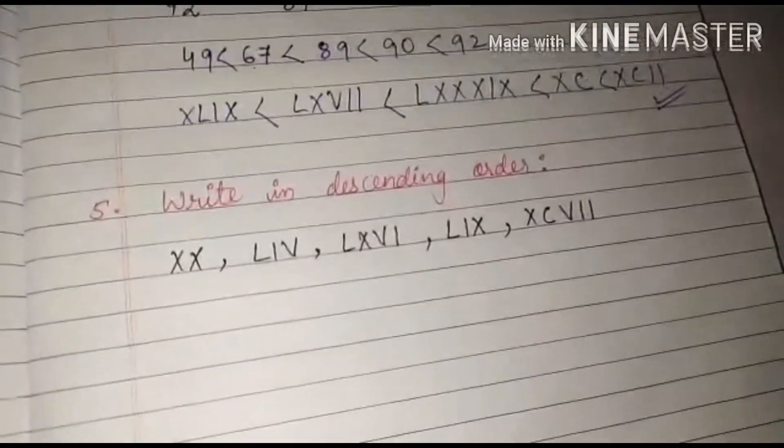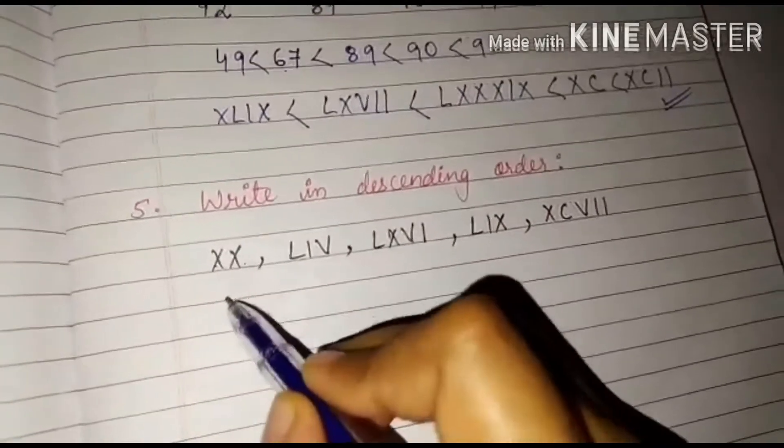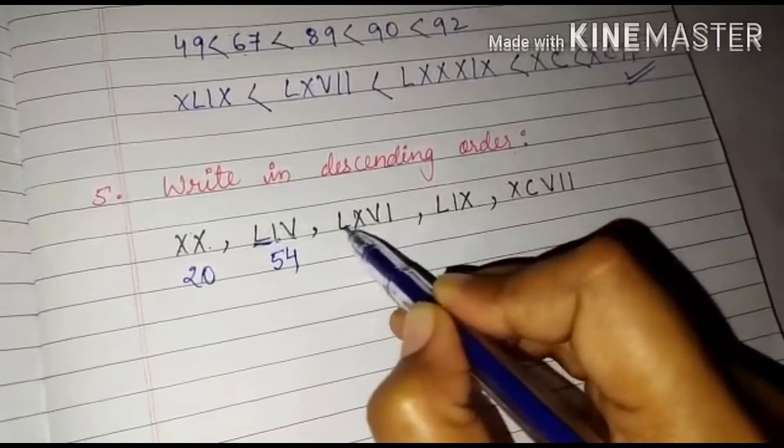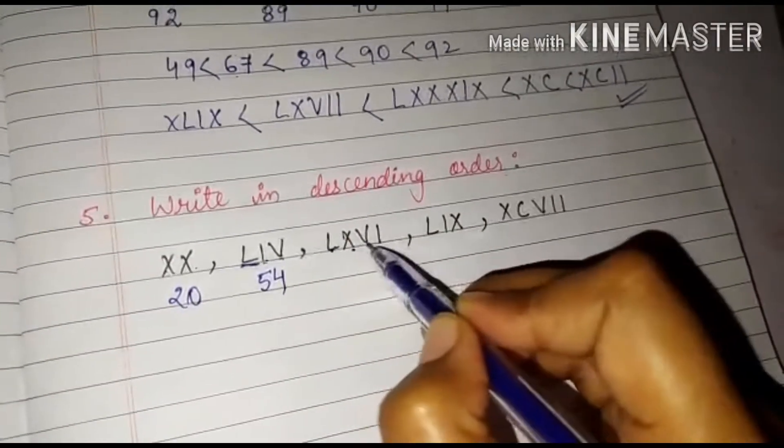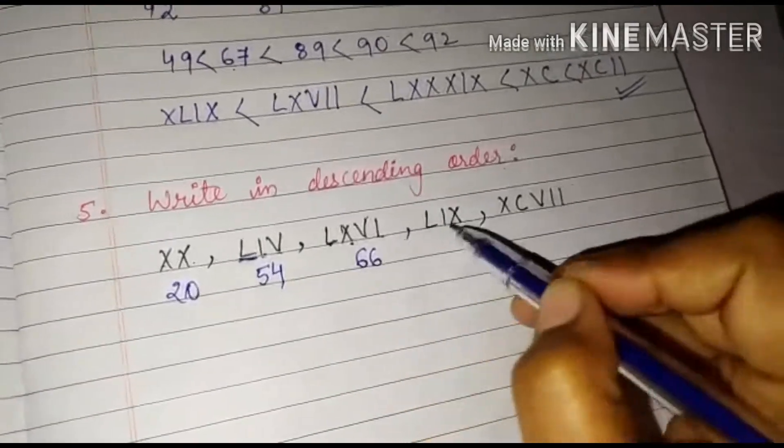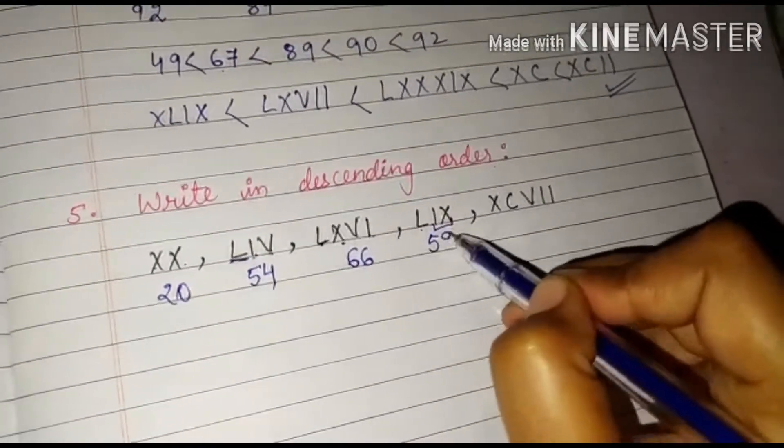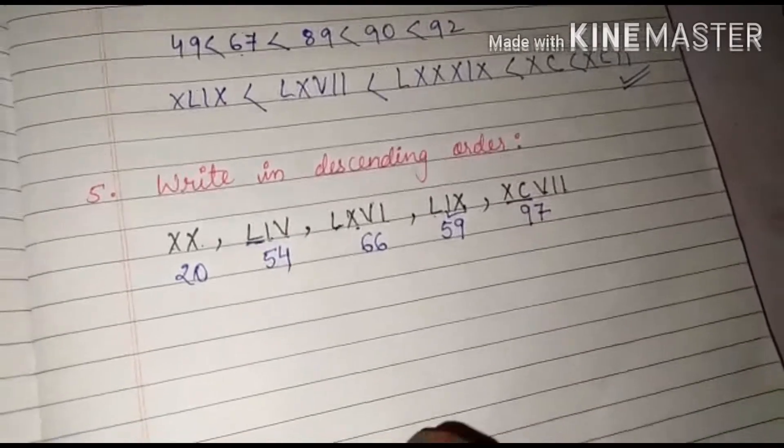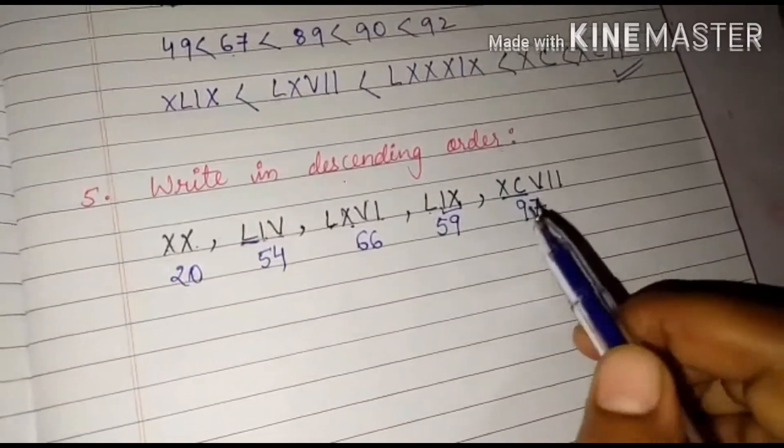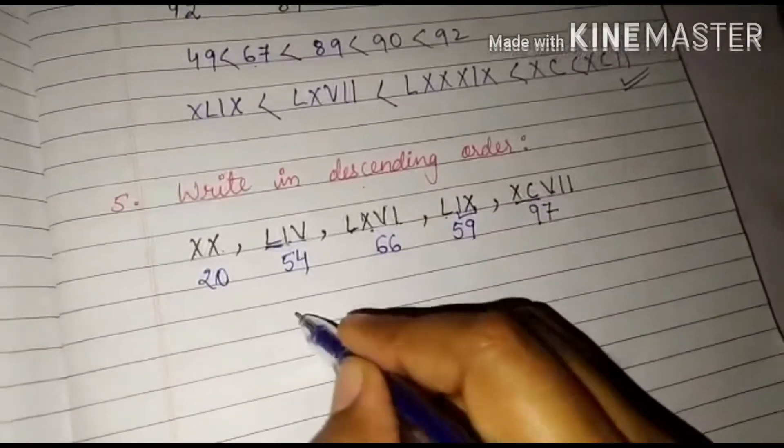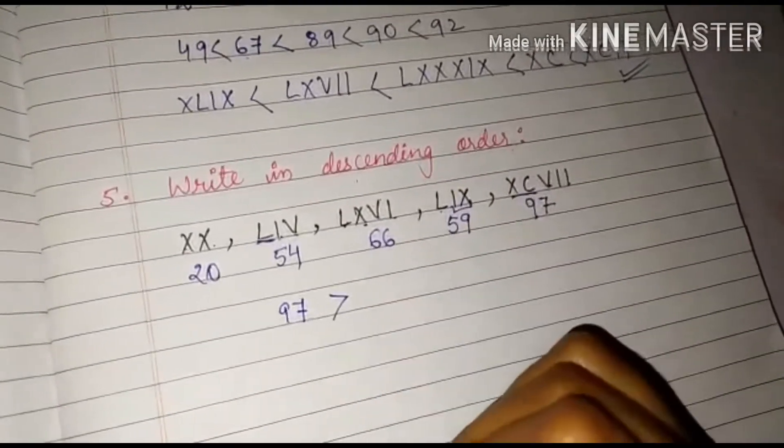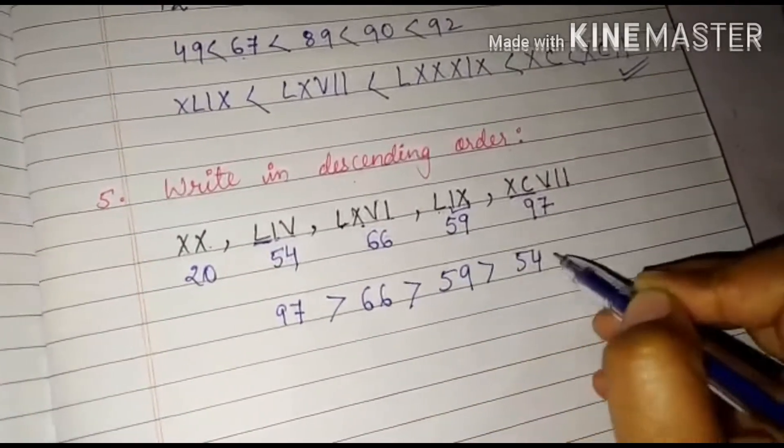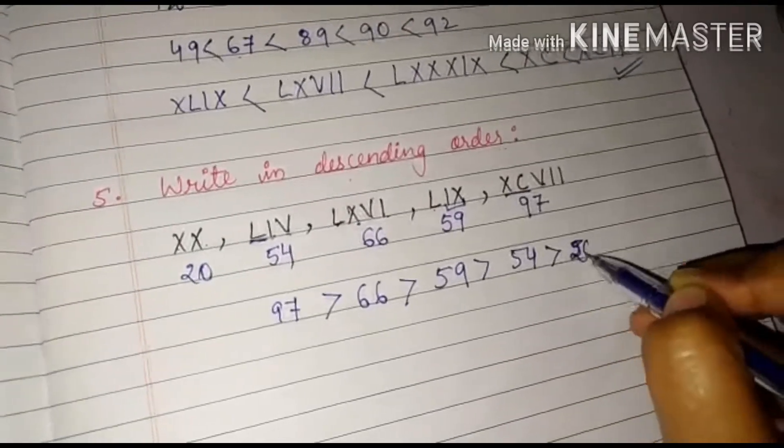So what is descending order? That is from greatest or largest to smallest. XX is 20. LIV is L 50, IV is 4. So it is 54. LX 50, X 10. So 60, V 5 and I 1, 6. So this is 66. LIX is L 50 and IX is 9. So it is 59. XCVII is 90 and 5, 6, 7, 97. So from descending order we have to do from largest to smallest. So largest will be 97 which is greater than 66, which is greater than 59, greater than 54, greater than 20.